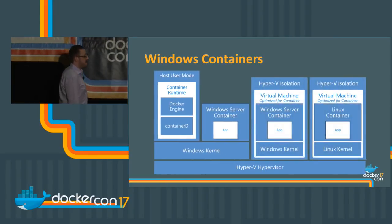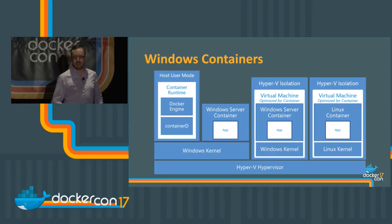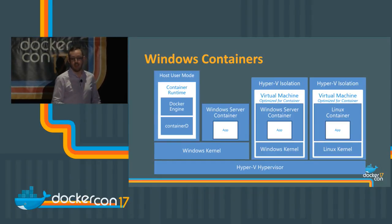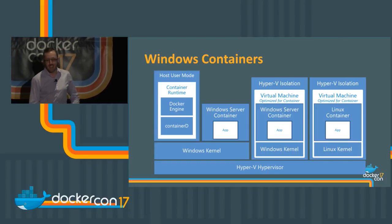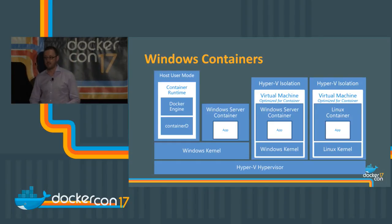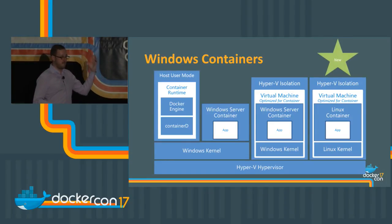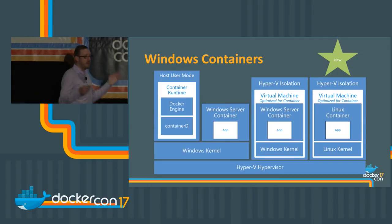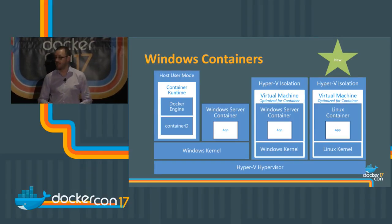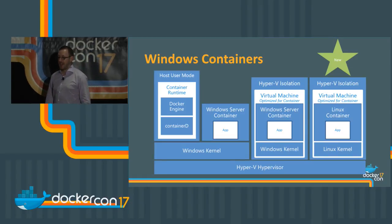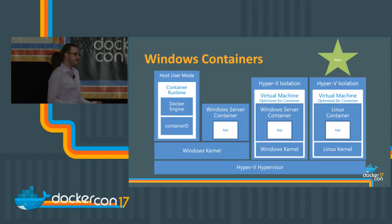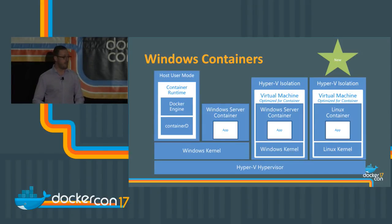Now we talk about Linux. We want to run the real Linux kernel, because kernels matter. You may want to run a different version of the kernel in different containers, a different distro, and you certainly want a different kernel than the Windows kernel when running a Linux container. So we give you a Linux kernel by virtue of the same Hyper-V mechanism, allowing you to run a real Linux container from Docker Hub side by side with Windows containers. This functionality will be coming — you'll start seeing PRs in the public repos fairly soon, and Windows builds with some of this functionality later this year.